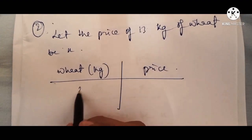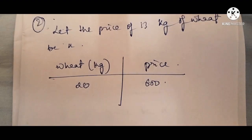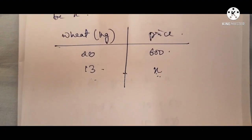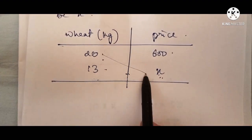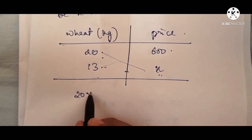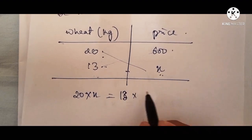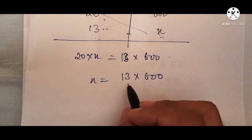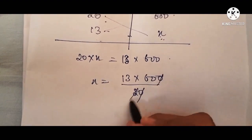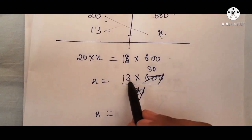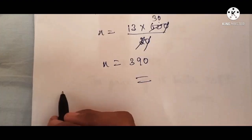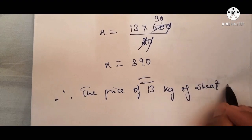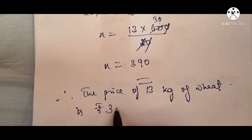So here 20 kg of weight costs rupees 600, and we do not know the price of 13 kg, so we will call it x. We will cross multiply: 20 into x equals 13 into 600. So 20 will go to the denominator side, giving x equals 13 into 30, which is 390. So the answer is rupees 390.